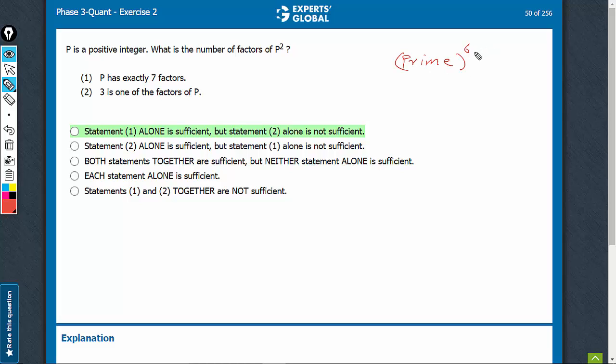Imagine, 6 plus 1 equals 7, which would be the number of factors. Therefore, P is of this form.